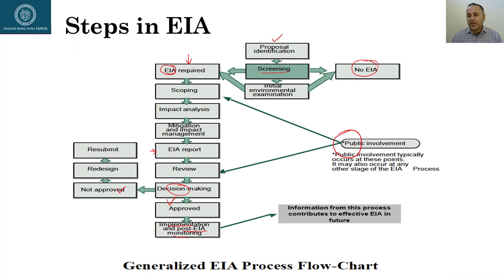Public involvement creates ownership among the public for the project — people feel the government or private company is valuing their feedback. Public involvement or feedback can be incorporated at the scoping stage or the review stage; there is no rule of thumb, you can involve the public at either or both stages.